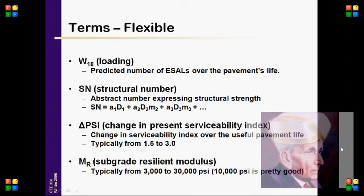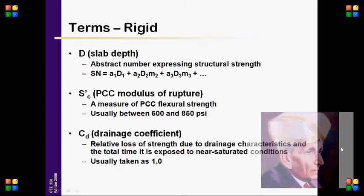PSI refers to the change in Present Serviceability Index — the change in serviceability over the useful pavement life, typically ranging from 1.5 to 3.0. Mr is the Subgrade Resilient Modulus, typically ranging from 3,000 to 30,000 psi; 10,000 psi is considered pretty good.